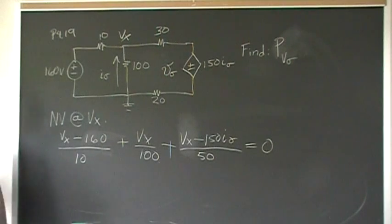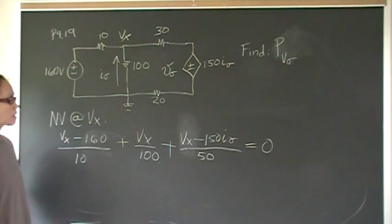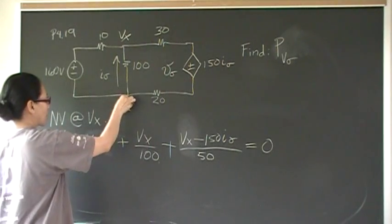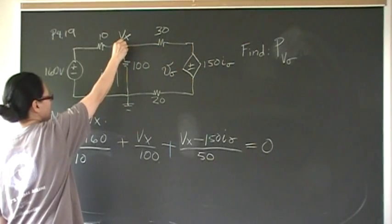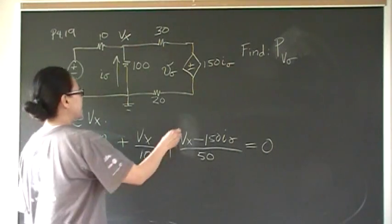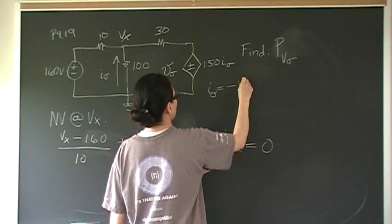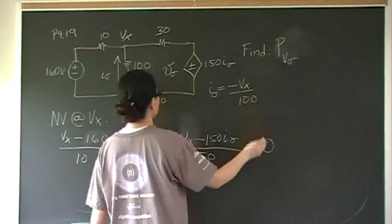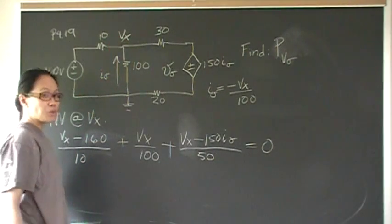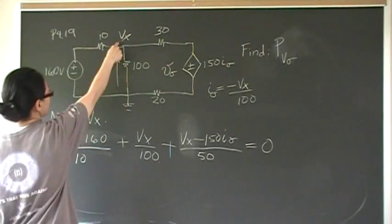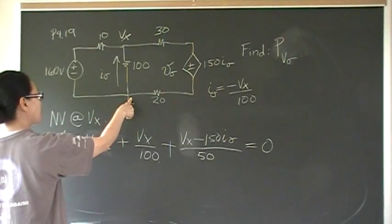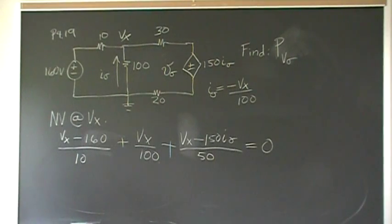So we have one equation and two unknowns: I_delta and V_x. That means we need a constraint equation. Notice that I_delta is in the direction going from ground upward. That means if we write the equation for V_x with reference to ground, it's going to be negative — it's in the opposite direction from how we've defined ground. So I_delta equals negative V_x over 100. If we had taken the other point as ground, you could write I_delta as positive V_x over 100.